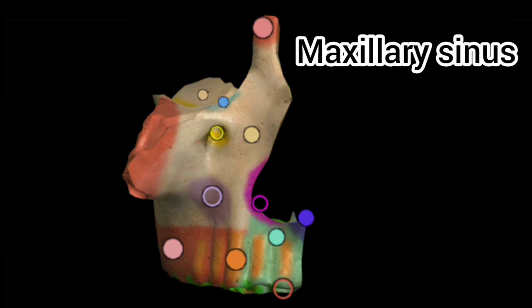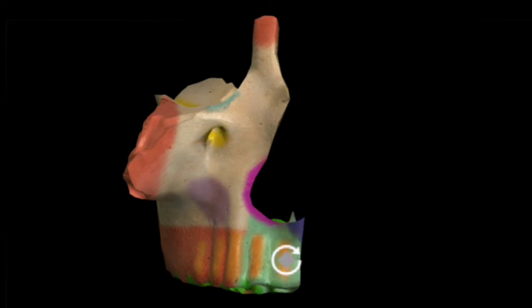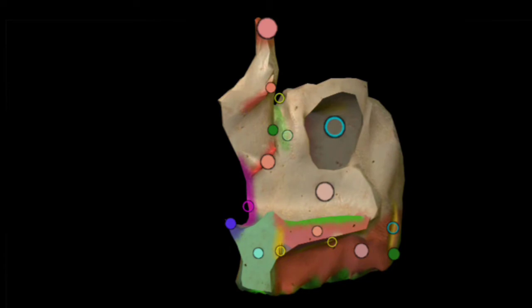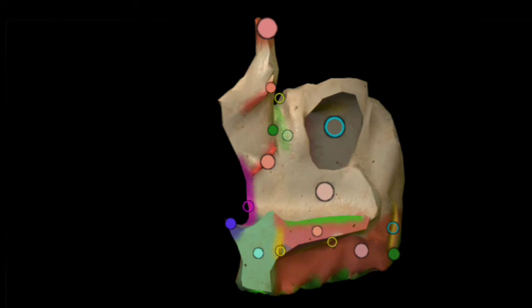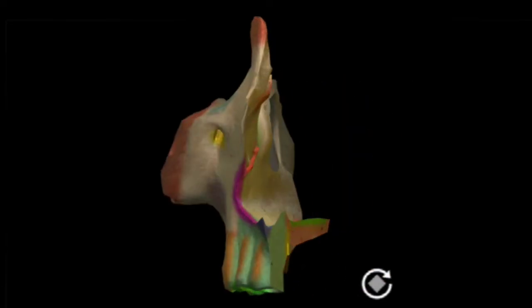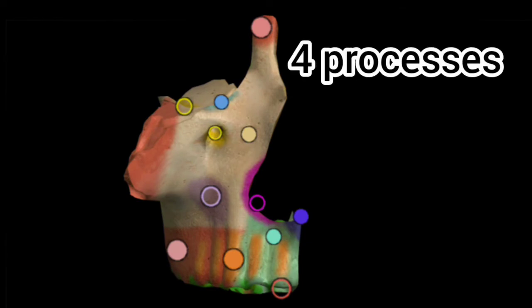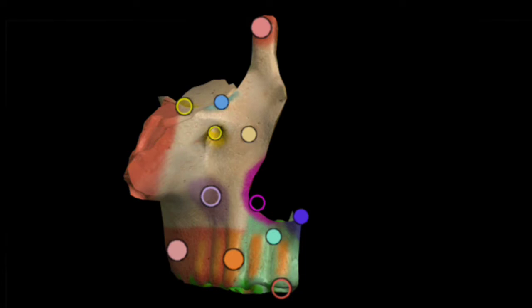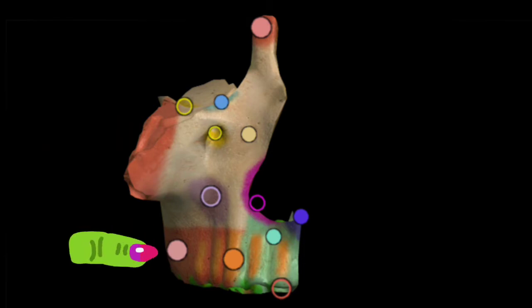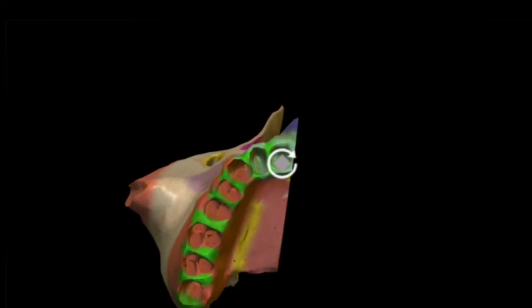Each half of the maxilla consists of two main sections: the body and the processes. The body mainly consists of the maxillary sinus, which is an air-filled space. Each half has its own maxillary sinus; it communicates with the nasal cavities and acts as a voice resonator. There are four processes: the frontal process, the zygomatic process, the alveolar process, and the palatine process.